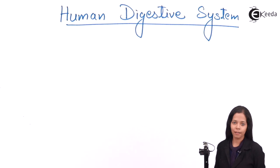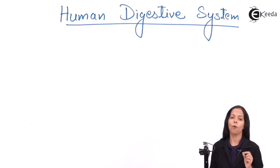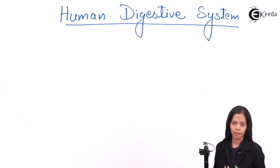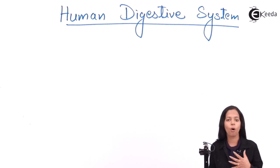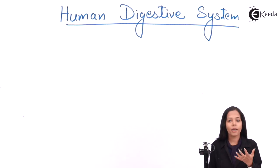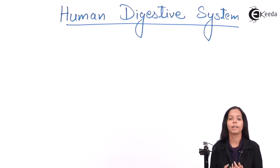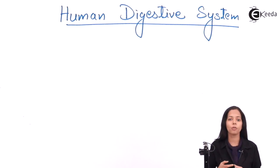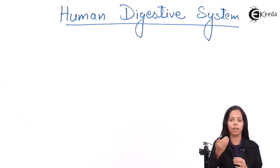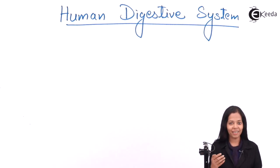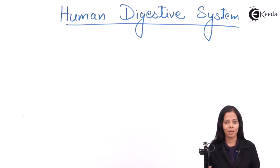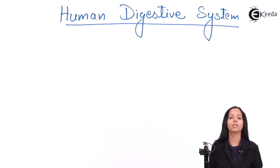Hello students, today we are going to study about one of the important physiology of humans — the human digestive system. You all know that to do any work, our body needs energy. From where is our body getting this energy? It is getting it from food. But is the food you are consuming giving you energy directly in the form you consume it? No — the food needs to be broken down first.